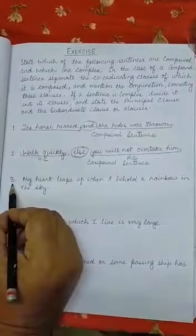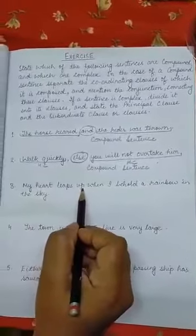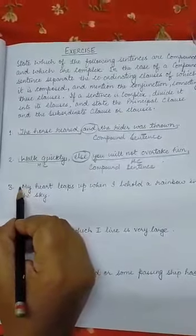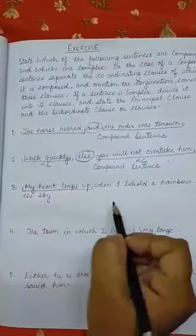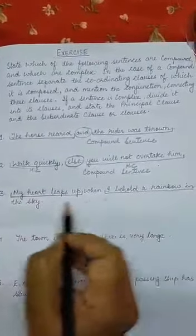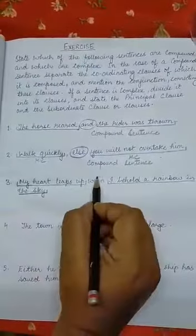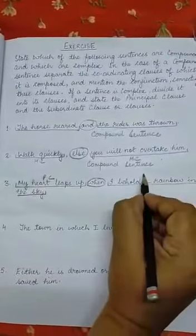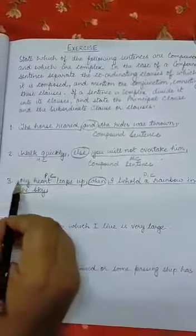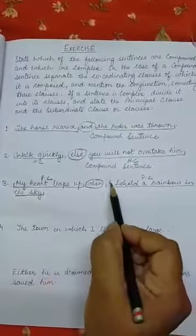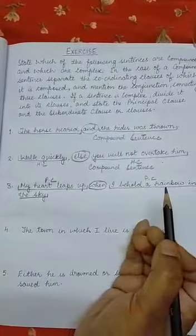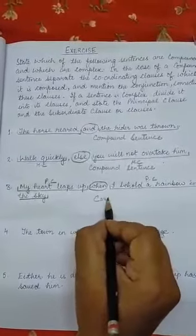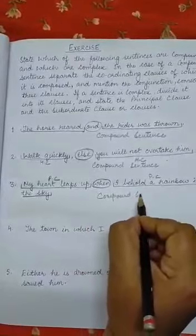The third sentence is: 'My heart leaps up when I behold a rainbow in the sky.' 'My heart leaps up' is one clause and 'I behold a rainbow in the sky' is another, connected by the conjunction 'when.' Both are considered independent clauses here, so this is a compound sentence.